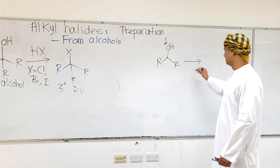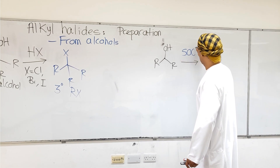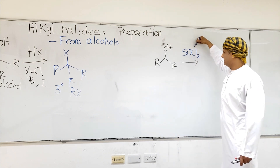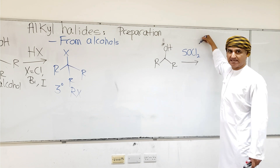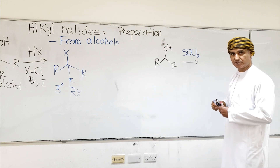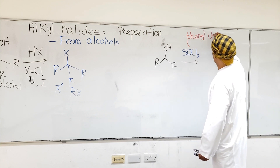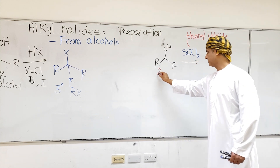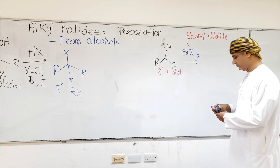The secondary alcohol reacts with SOCl2 — thionyl chloride — to produce the corresponding alkyl chloride. SOCl2 stands for sulfur, oxygen, chlorine (two), and this reagent is named thionyl chloride.